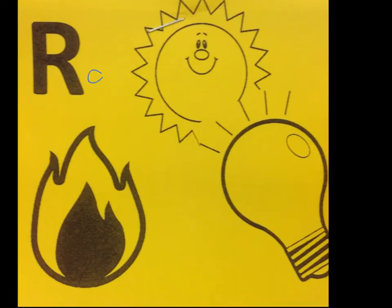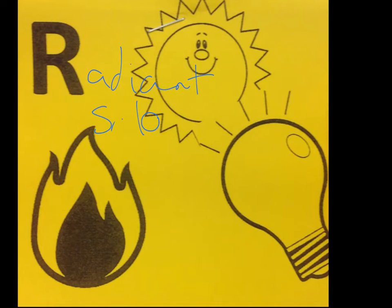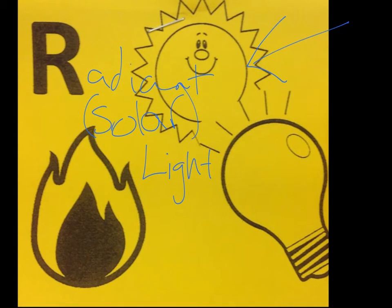Alright, so here we have radiant energy. For radiant energy, we can also say solar energy, and I also like to use this for light energy. We have some examples here: radiant energy that comes from the sun — that's our solar energy — and we have light energy here in our light bulb. Fire also gives us light, so we also have light energy there.